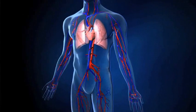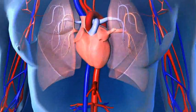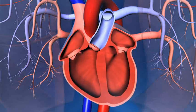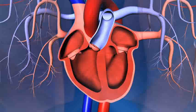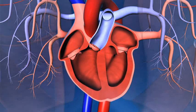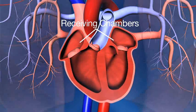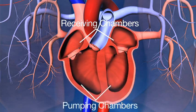Let's talk about the heart — what does the normal heart look like and how is it supposed to function. The heart is a four-chamber structure. There are two chambers on the top called the receiving chambers and two chambers on the bottom called the pumping chambers.